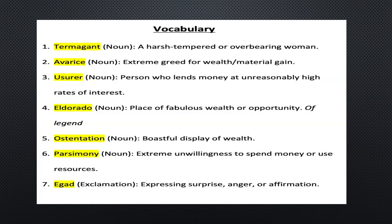Before hopping into the discussion of the story, I wanted to include some vocabulary I encountered while reading The Devil and Tom Walker. I thought these were very interesting words that some students may not have encountered before, so I thought I'd give a quick overview. We've got a few different words: termagant, avarice, usurer, El Dorado, ostentation, parsimony, and egad, which is an exclamation.